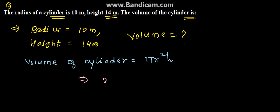So this comes to pi is 22 by 7, r is 10 into 10, and height is 14. So let us do the calculation. This is 7 ones, this is 7 twos. So this comes to 22 into 10 into 10 into 2.